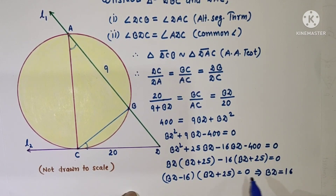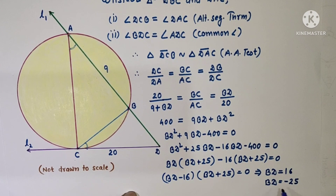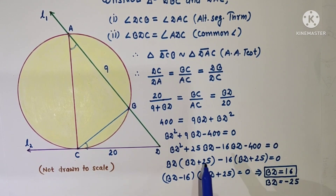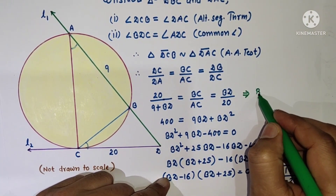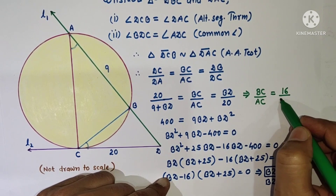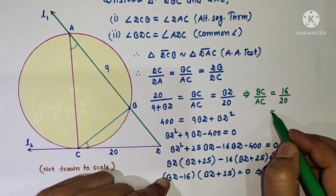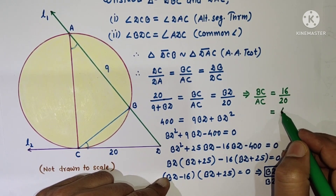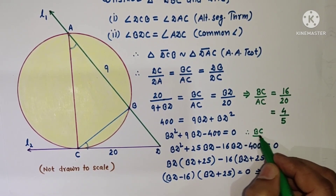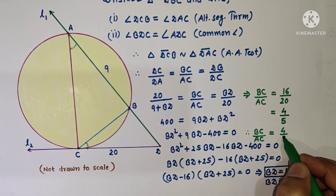And BD plus 25 equals zero gives BD equals minus 25. Since BD cannot be negative, this value is ignored, so BD equals 16. Now we are concerned with BC by AC, which equals BD by DC, that is 16 by 20. After simplification, 4 fours are 16 and 4 fives are 20, so BC by AC equals 4 by 5. This is the answer.